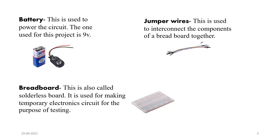The battery used is typically a 9-volt type, used to power the circuit. Jumper wires are used to interconnect the components on the breadboard. The breadboard is also called the solderless board. We have two types of boards commonly used for electronics projects — the soldered one that components are placed on permanently, but this breadboard is just used for testing purposes.